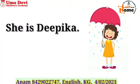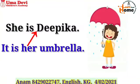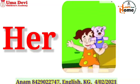Now see this picture. Tell me what can you see? Girl. Her name is Deepika. What is the name of the girl? Deepika. Tell me, what does Deepika have? Umbrella. So for Deepika, what will you use? Her. This umbrella belongs to Deepika, so you will say: it is her umbrella. In place of Deepika, you will use 'her.' His is used for a male person and his is used for his things. Her is used for a female person and her things.